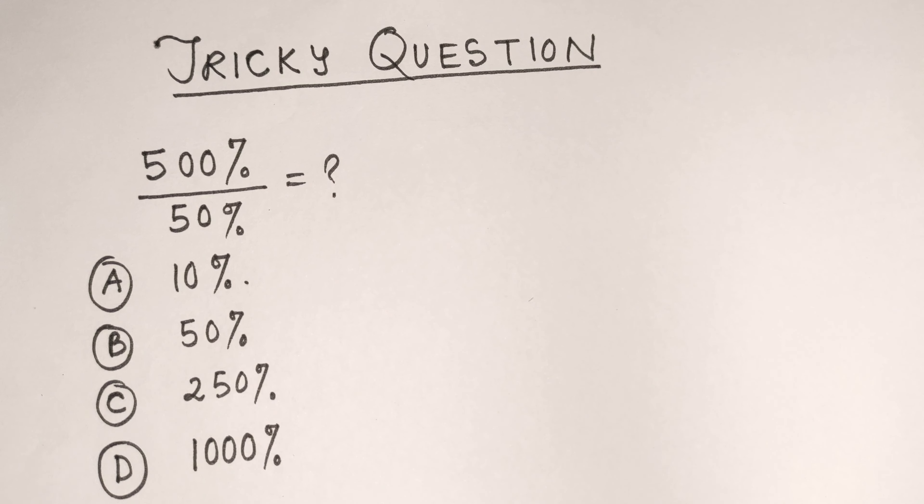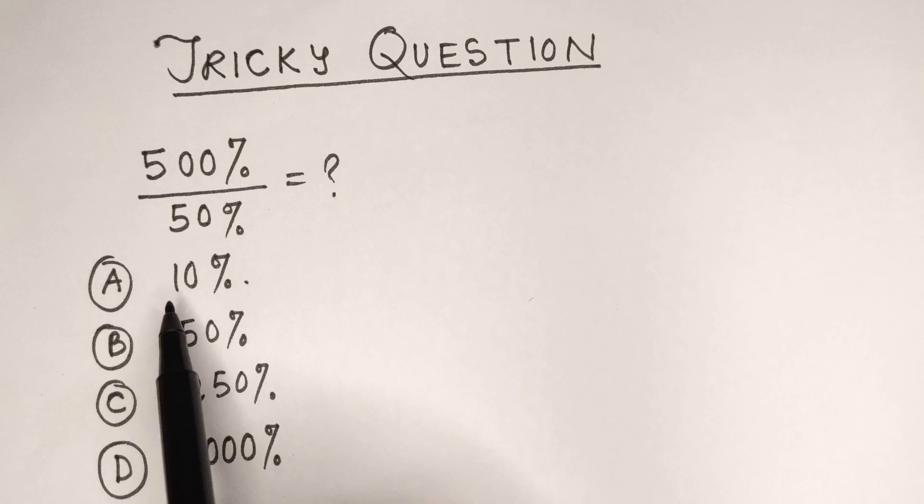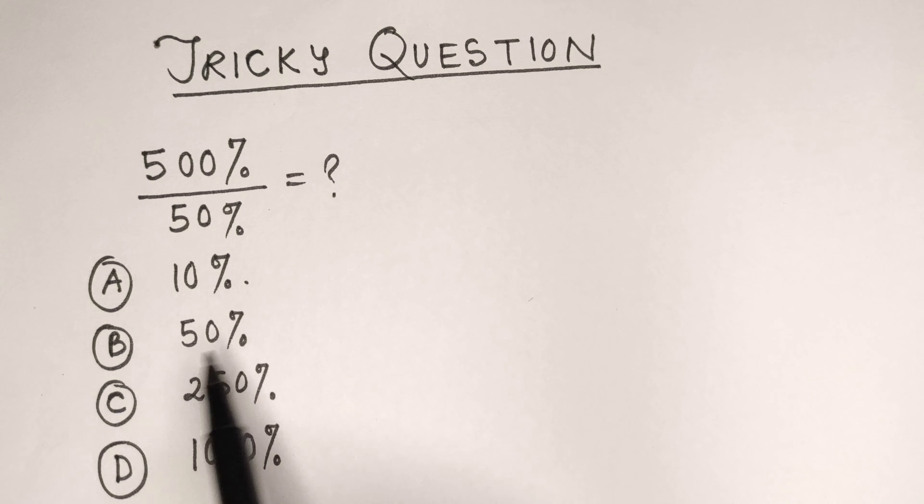Is it option A: 10 percent, option B: 50 percent, option C: 250 percent, or option D: 1000 percent? Let's find out.